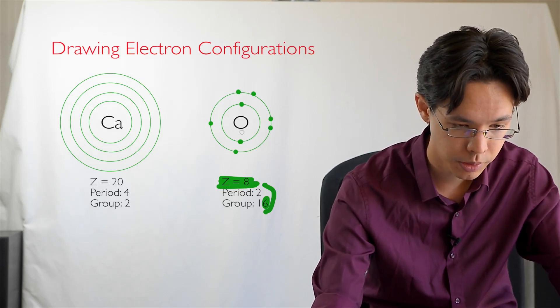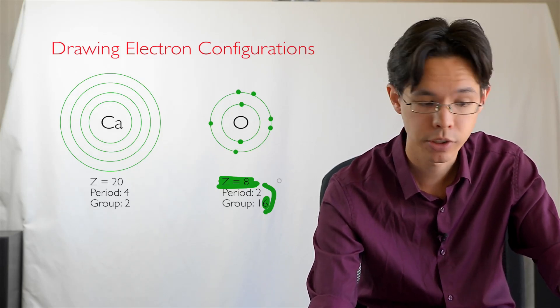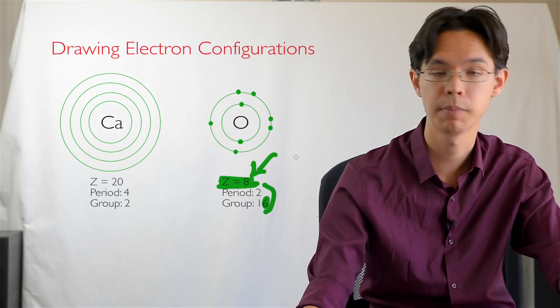Let's see if this adds up to the atomic number. So you've got two in the inside shell, one, two, three, four, five, six, seven, eight. Eight electrons in total, exactly what the atomic number told us it should be.